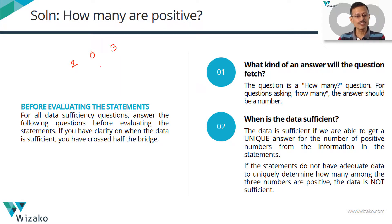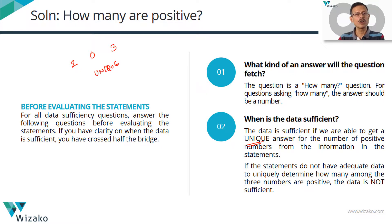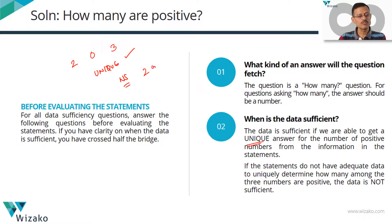Before we look into the statements, let's get an idea about how the answer should be. The question asks how many of x, y and z are positive, so we need a specific number — two are positive, none are positive, or all are positive. The operative word is 'unique.' If we can arrive at a unique answer, the data is sufficient. If the answer could be two or three, we're not sure — that's when the data is not sufficient.